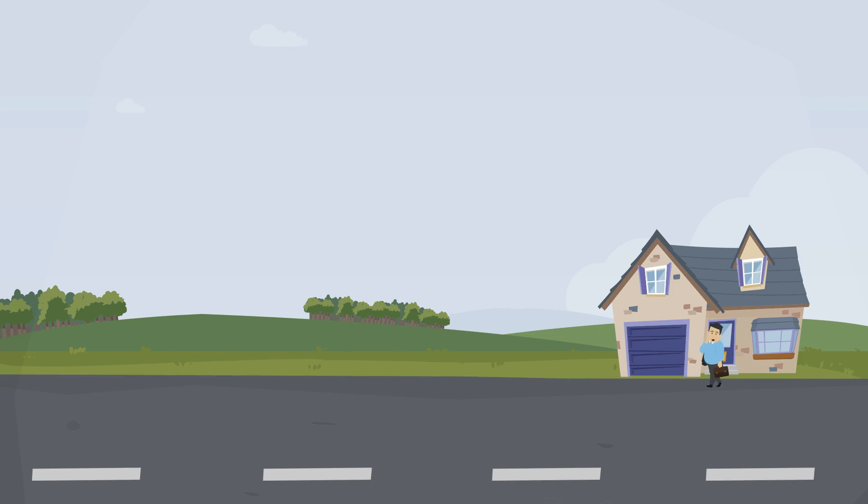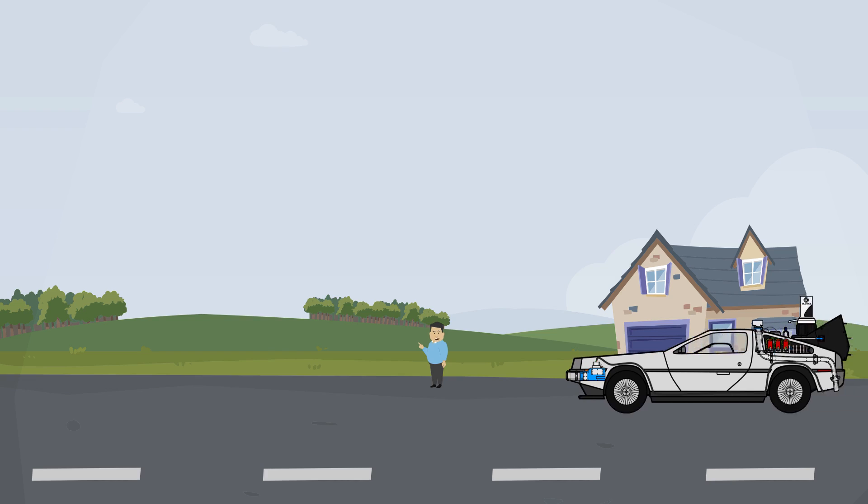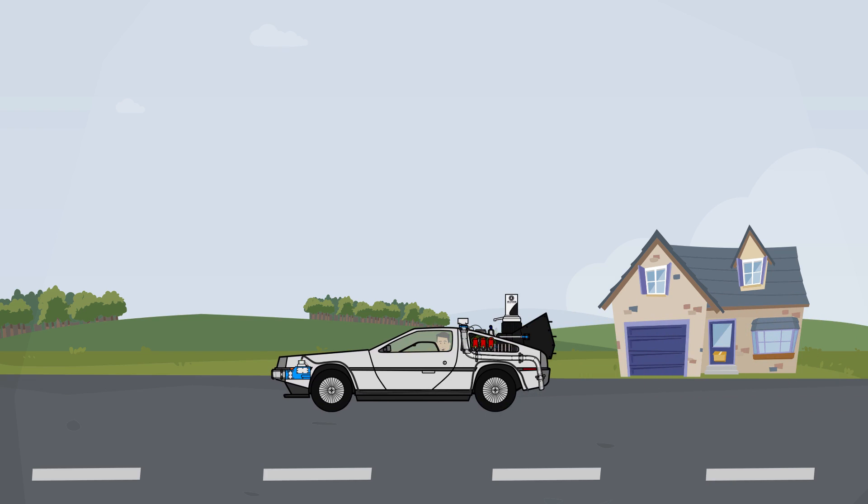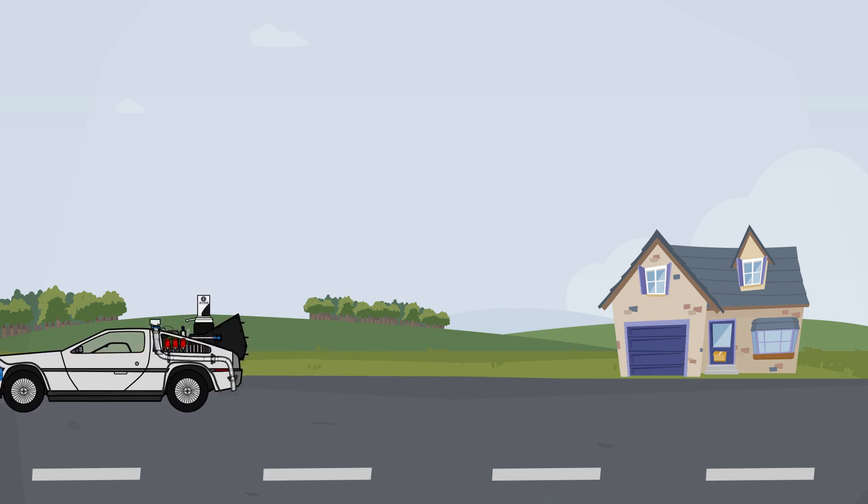On average, a UK household will use 500 watts every hour. That's even when you're sleeping. That means that at peak times, the national grid needs to provide 50 gigawatts of power. That's enough power to time travel 41 times in a DeLorean!